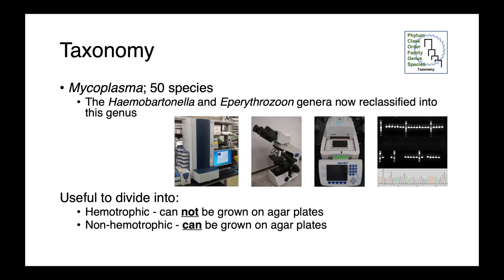Looking at the taxonomy of mycoplasma, there are 50 species within the genus. We now include the formerly described Haemobartonella and Epirithrazoan within mycoplasma — a consolidation of genera that has happened as we've gained new techniques to better evaluate the relatedness of these organisms, whether by MALDI, microscopy, or molecular methods. It's really useful to divide mycoplasma species into hemotrophic bloodborne mycoplasmas that cannot be grown on agar plates, from non-hemotrophic species, which can.